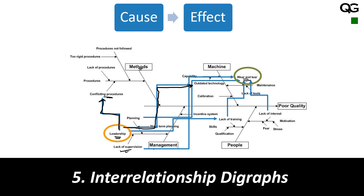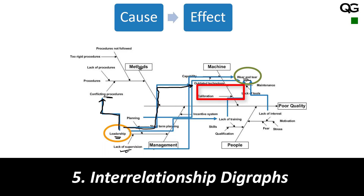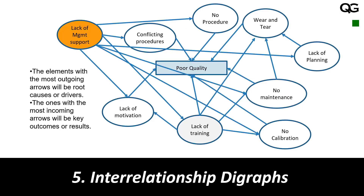So what we have done is connected items in the fishbone diagram with arrows that tell us what causes what — what is the cause and what is the effect. Here the cause is leadership and the effect is conflicting procedure; cause is leadership, effect is outdated technology; cause is lack of supervision and the effect is wear and tear. Once you have connected all these interrelationships in the fishbone diagram, you can make a cleaner version of that, which is shown here.